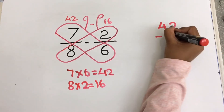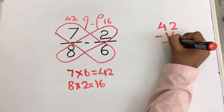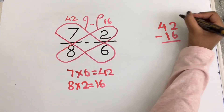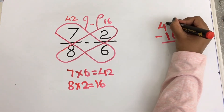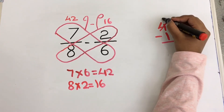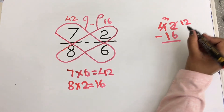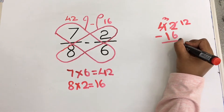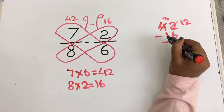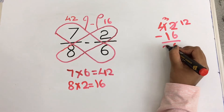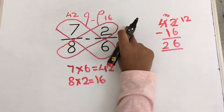42 minus 16. I am going to borrow. So 12 — here it will become 3. 12 minus 6 equals to 6, and 3 minus 1 equals to 2. So we get 26 in the numerator.